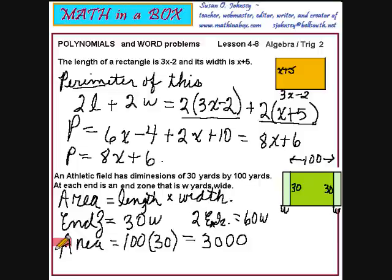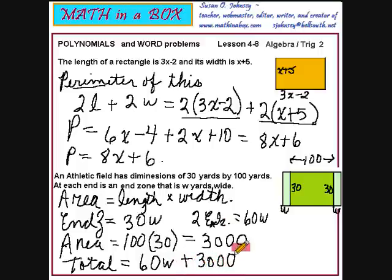We will write that when we have finished finding the total area. Yards squared will be our final unit of measurement. Now, the total area is simply found by adding these together. We have 60W for the two end zones plus 3,000 for the large rectangle. And all of this is in square yards. We have a polynomial expression for the area of an athletic field.